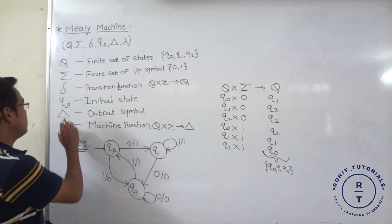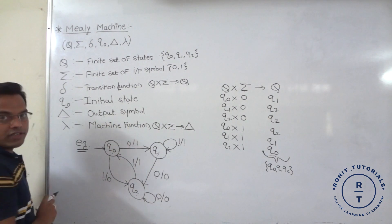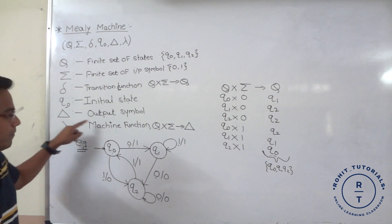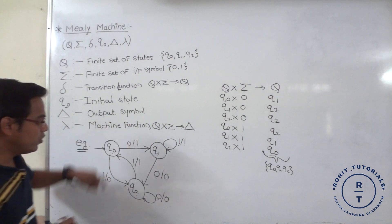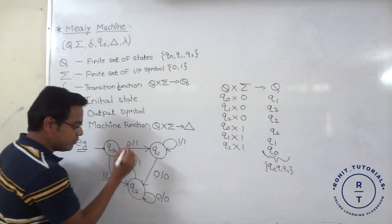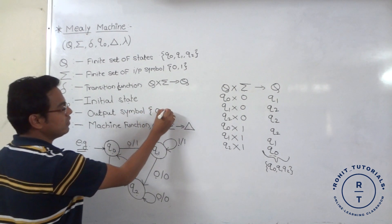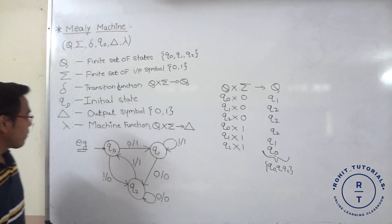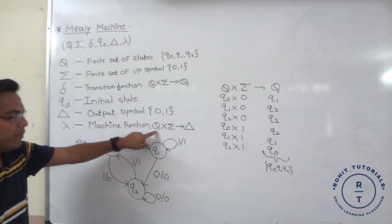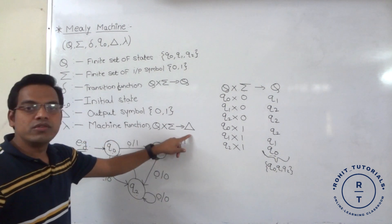Next is Q0, initial state — we represent Q0 as the initial state. Next is delta, output symbol. Here output is represented after the slash — 1 is present or either 0 is present. So output symbols are either 0 or either 1. Next is lambda, machine function — capital Q, for any input that occurs, it gives you the output.